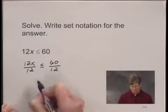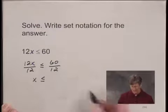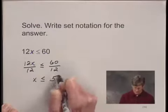Now I have 12x over 12, which is 1 times x, or just x, and that's less than or equal to 60 divided by 12, which is 5.